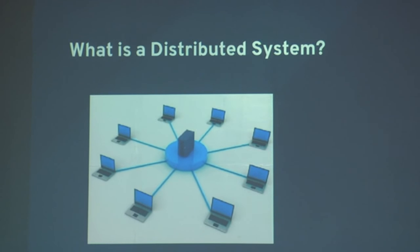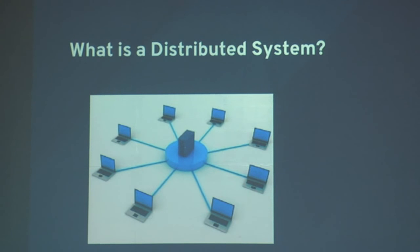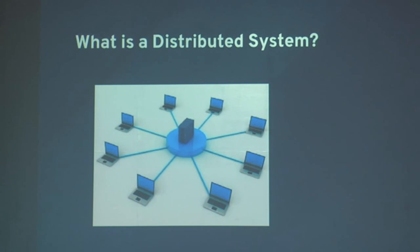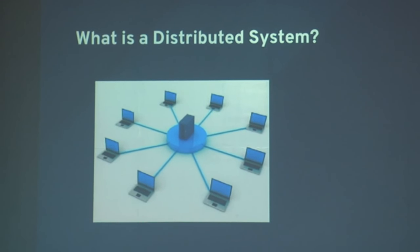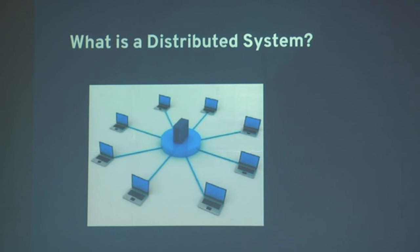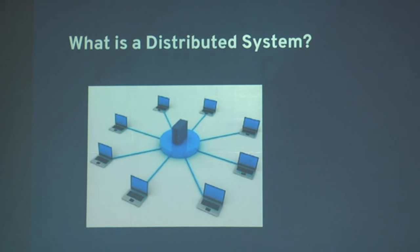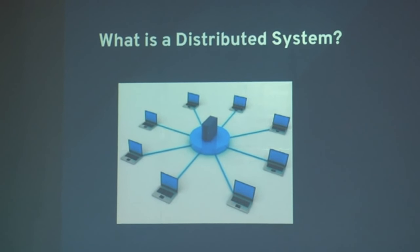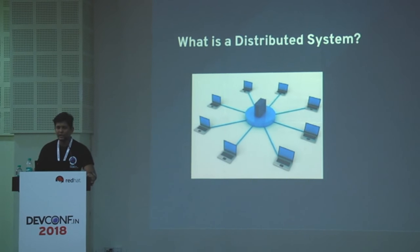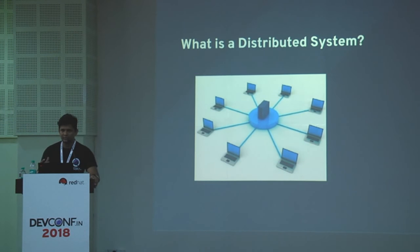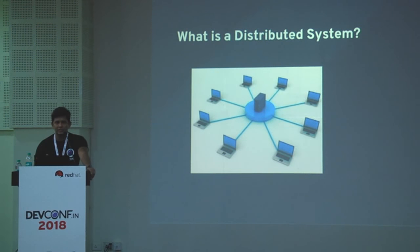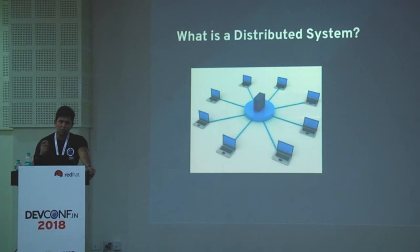The first thing is: what is a distributed system? Most of you are probably familiar with this, but let me give a brief overview. In simple language, a distributed system is a system in which components are located on networked computers that coordinate and communicate their actions by passing messages. They interact with each other in order to achieve a common goal.